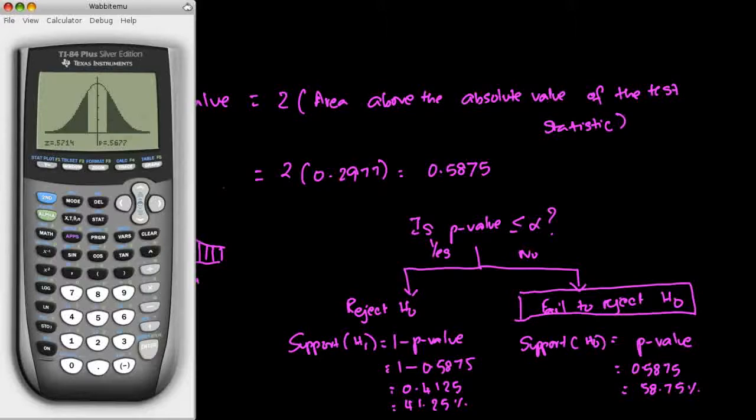That is how you perform a two-tail test for population proportion, manually, using the manual approach and using the calculator approach. I hope you understood the two-tail test, and I plan to make videos on one-tail tests, such as the left and right tail tests, in the future. Thank you for watching.